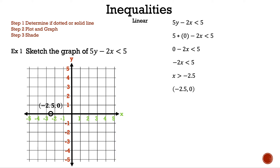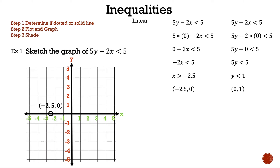Now let's find our y-intercept. Let's rewrite our inequality and substitute 0 in for x. And now we have 5y minus 2 times 0 less than 5. And negative 2 times 0 is 0, so now we have 5y minus 0 less than 5. Let's drop that 0, so now we have 5y less than 5. Let's divide both sides by 5, so now we have y less than 1. And now we have our second point: 0, 1. Let's plot that point on the graph. And if we take a closer look at the point on the graph, we have an open circle — and once again, that's because we have less than.